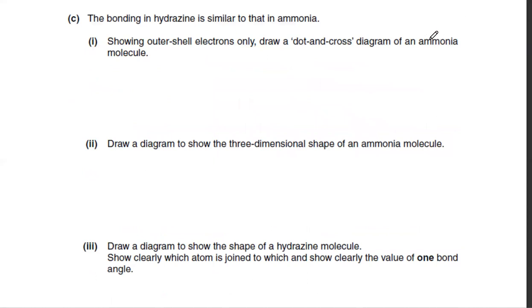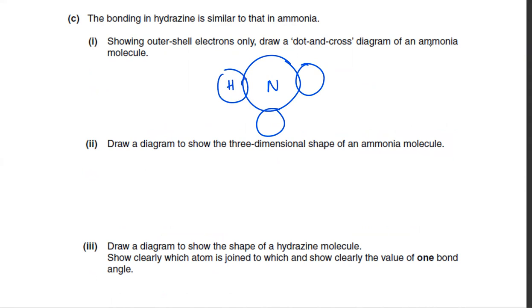For ammonia, NH3: nitrogen has a lone pair on top and three hydrogen atoms bonded to it. To draw the three-dimensional shape, it's derived from a tetrahedral shape — three H's on three sides and a lone pair on top. There's nothing attached on top, so it's basically a three-sided pyramid — trigonal pyramidal.